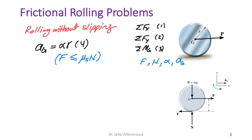We assume static friction and solve equations one through four to obtain f, N, α, and a_G. Then we check: multiply N by μ_s and compare with f.